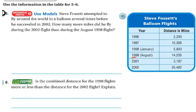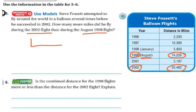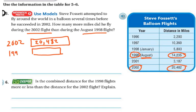First, here's 1998 — but remember, he wants the August flight, so we need this number. The other piece of information I need is the 2002 flight where he succeeded. So I can draw a bar model. The 2002 flight is 20,482, and I compare that to his August 1998 flight, which is 14,235. I'm looking for the difference right here in the bar model, which tells me I'm subtracting.